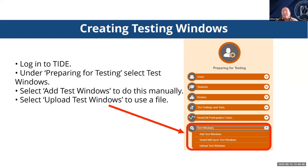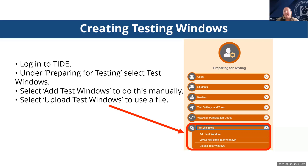For testing windows: many of you have already created your windows for benchmarks and interims. You'll be able to set your summative window when it opens November 1st. If you're wondering why the math interim isn't available yet — it's because it's not available yet, so it won't appear in your window. To set windows, log into TIDE, go to the orange section, and select Add Test Windows. These windows can be edited at any time. Enter the required information, select the tests by clicking the checkbox or the plus icon next to the test name, add them to the window, and click Save.